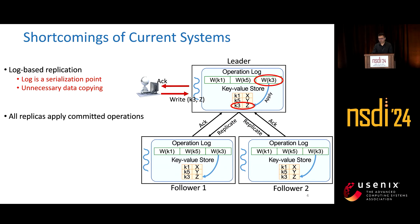The second is that there's unnecessary data copying between the local Key-Value Stores and the operation logs. Every replica is an active replica, and it needs to apply the committed operation to its local Key-Value Store. So this results in wasted CPU cycles repeating work.